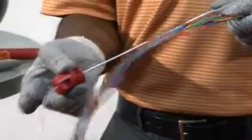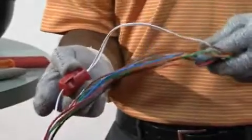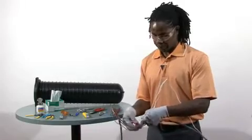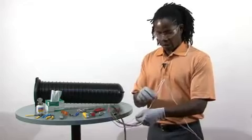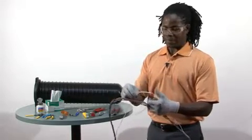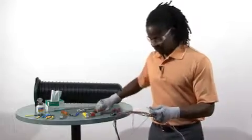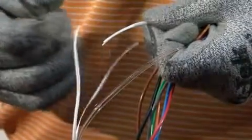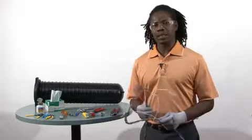As you can see, my buffer tube is split. Then use your snips and simply cut the buffer tubes. Your end product should look something like this.